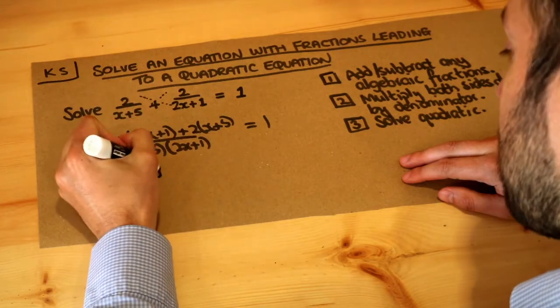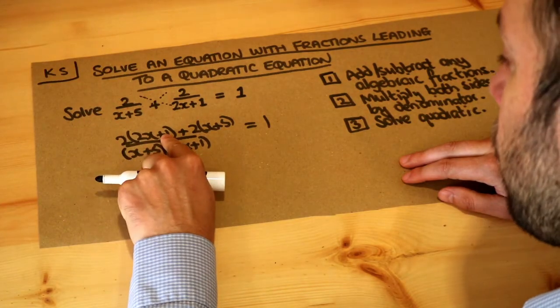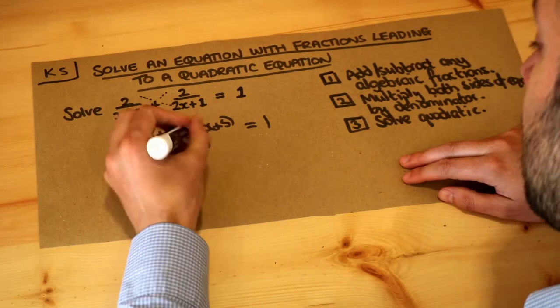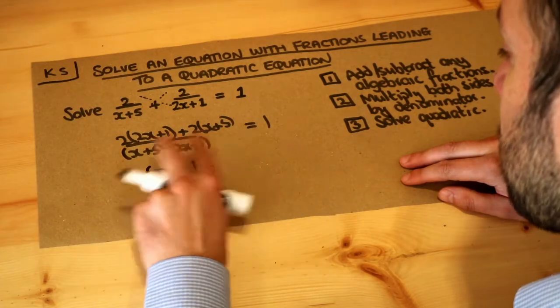I'm just doing this quite quickly. 2 times 1 is 2, plus 2 times 5 is 10. 2 plus 10 is 12, and we should multiply out the denominators as well.